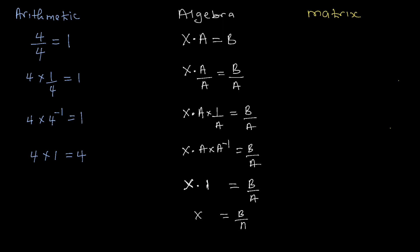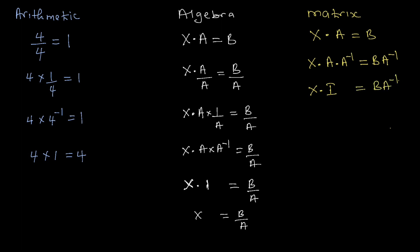In matrix, if you have x times a equals b, you cannot divide both sides by a to make x the subject. What you can do is use the inverse of a: x times a times a to the power minus one equals b times a to the power minus one. In matrix, a times the inverse of a is the identity matrix I, so x times I equals b times a inverse. Since I acts like one, x equals b times the inverse of a.